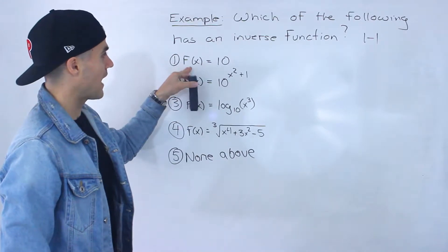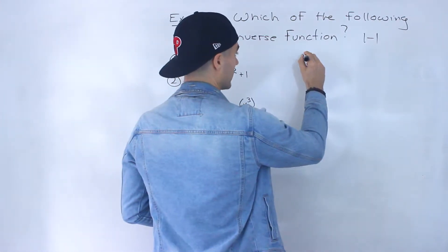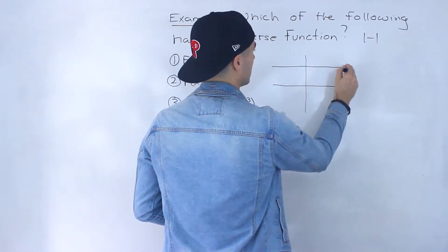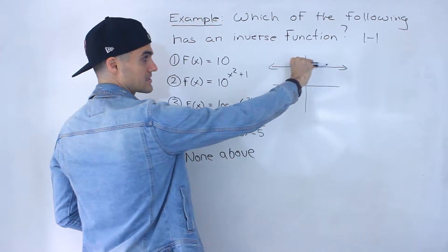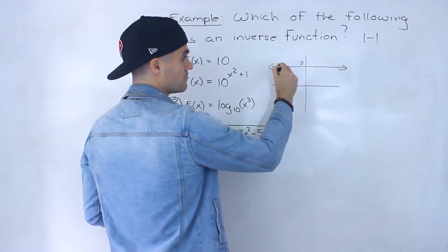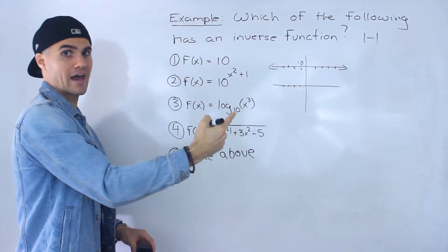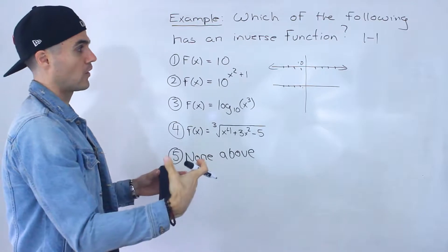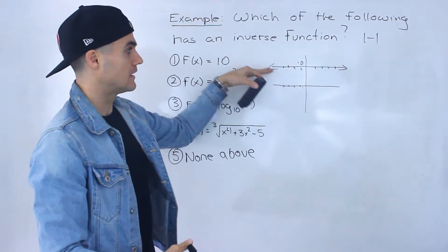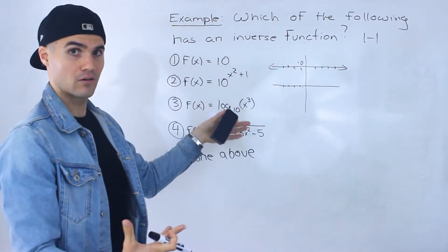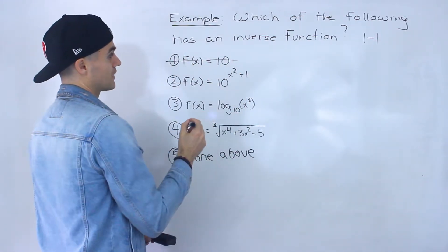Starting with number one, we have f(x) = 10. A function equaling any constant is just a horizontal line at 10. If we run a horizontal line through that, it's going to fail the horizontal line test because there are going to be multiple x-values that have the same y-value. You can't have that for a one-to-one function, so this one definitely doesn't have an inverse function.